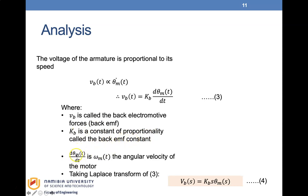Taking the Laplace transform of equation three, we arrive at equation four in the S domain: dθM/dt becomes S·θM(S). So VB(S) = KB · S · θM(S).